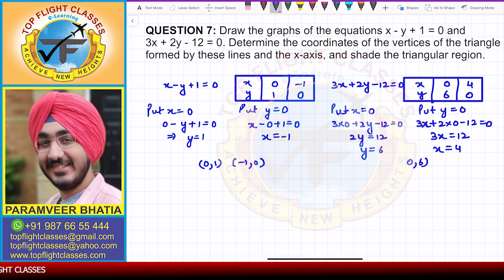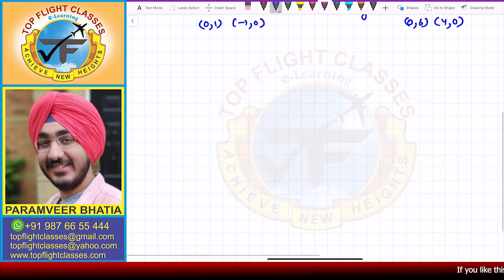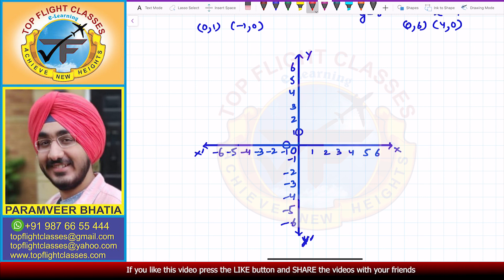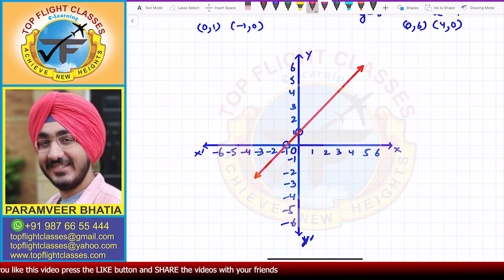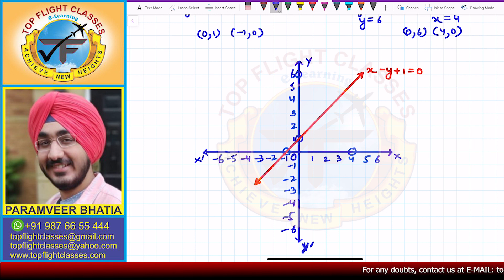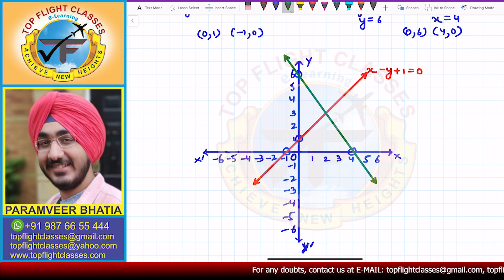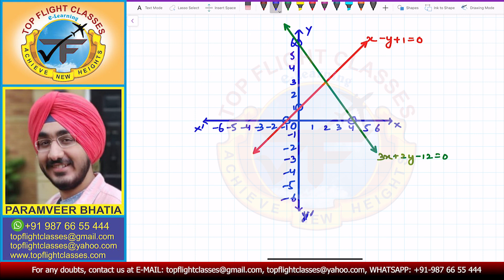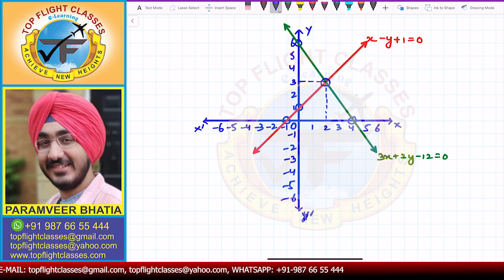So for the first equation we have coordinates (0, 1) and (-1, 0), and for the second equation (0, 6) and (4, 0). Now let's draw the graph. Plotting (0, 1) and (-1, 0) and drawing a line gives us x minus y plus 1 equal to 0. Plotting (0, 6) and (4, 0) and drawing a line gives 3x plus 2y minus 12 equal to 0. The intersection of the two lines is at coordinates (2, 3).